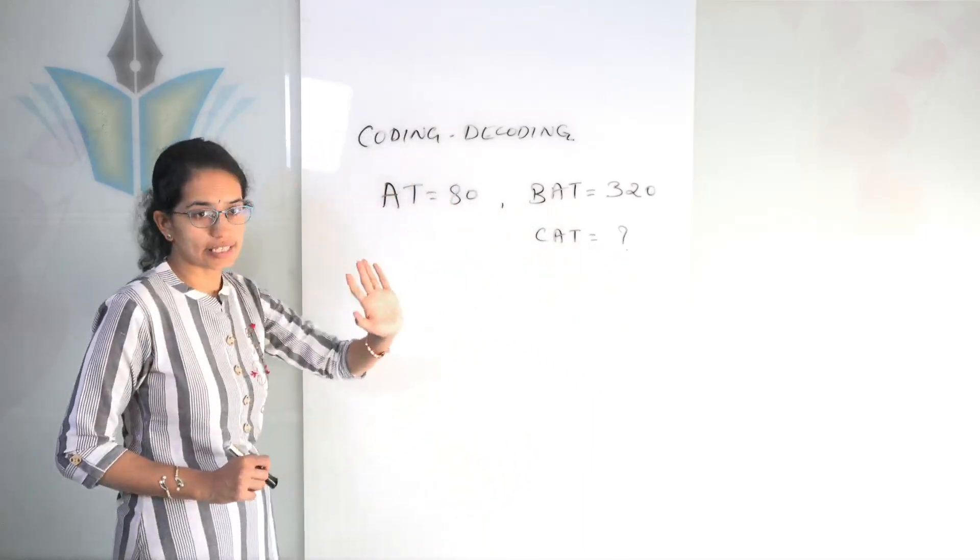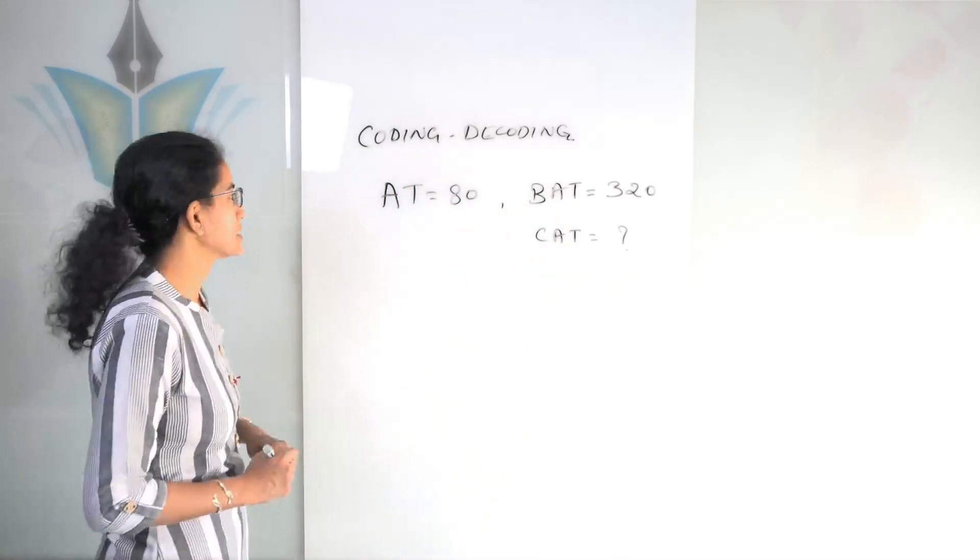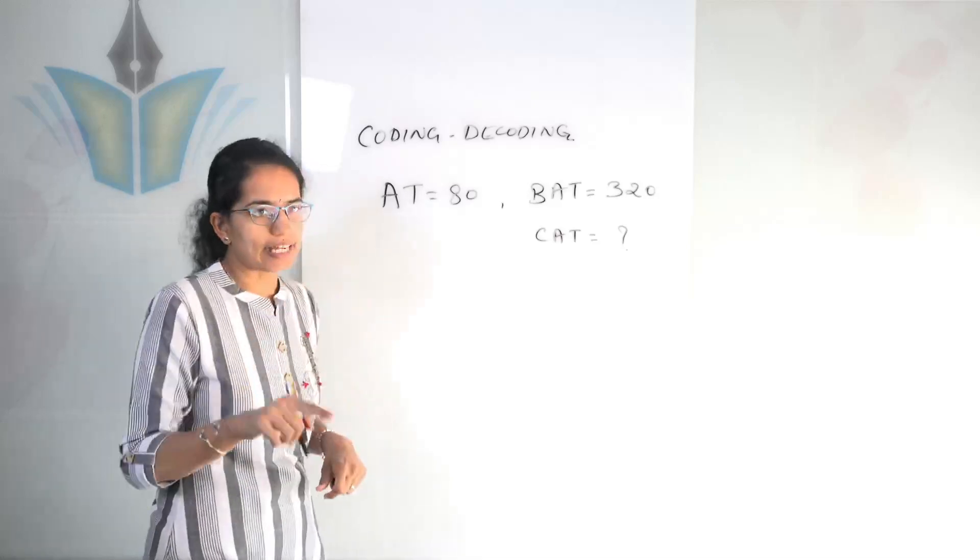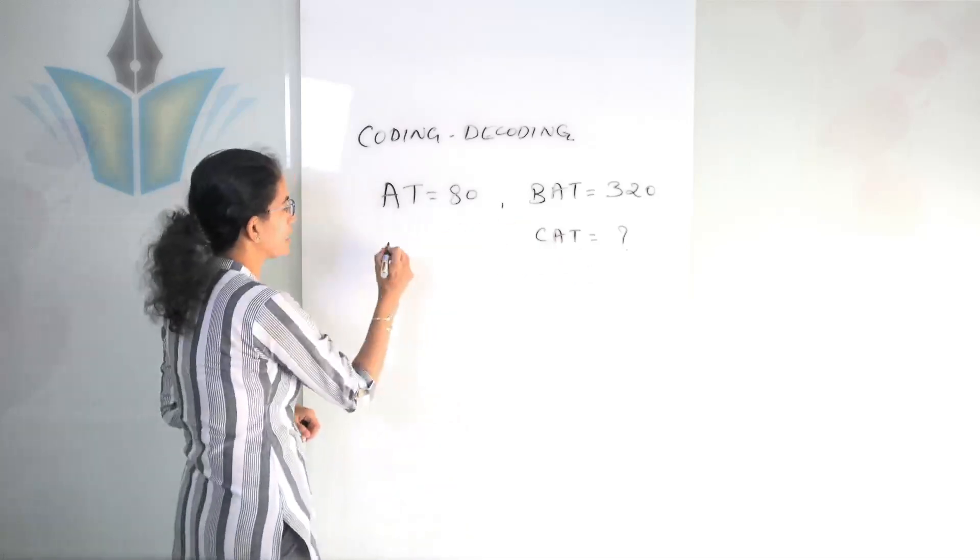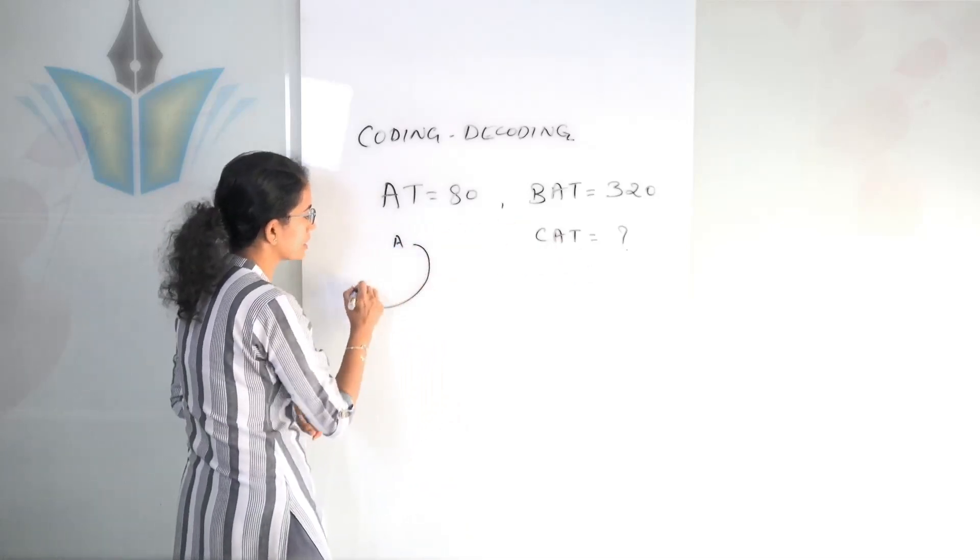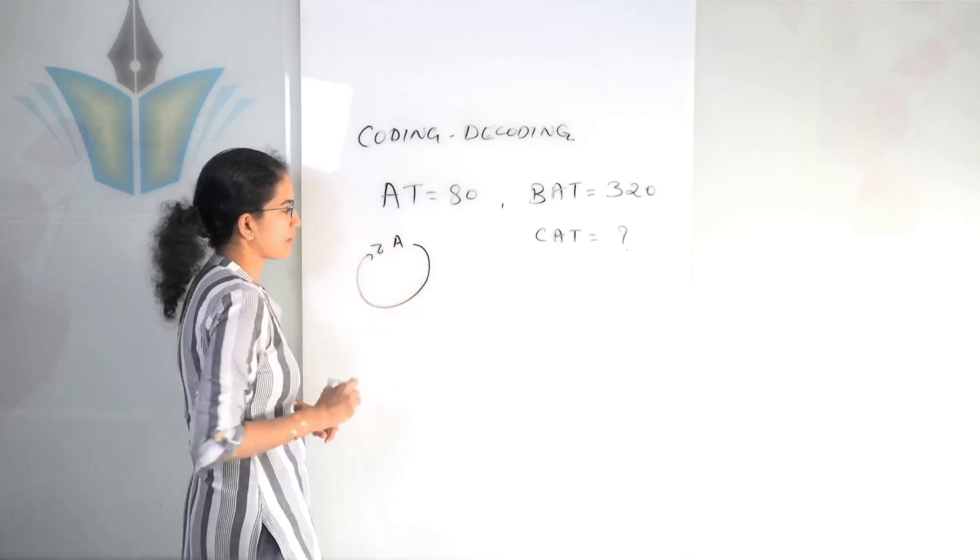Now when there are questions like this, what's really important to understand is the cycle that we create from A to Z, as we have discussed in our previous lectures.